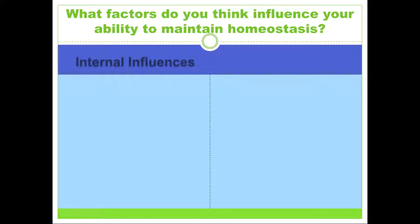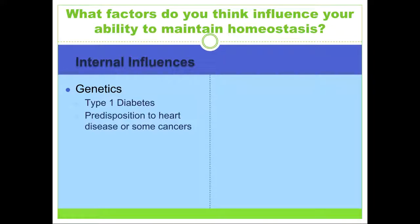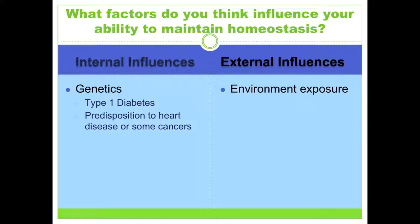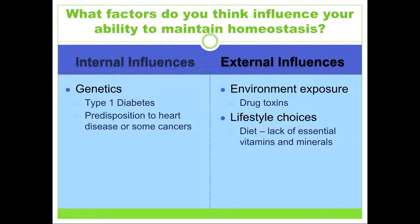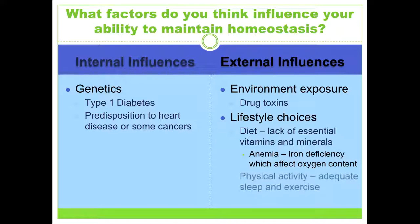There are internal and external influences on your ability to maintain homeostasis. Internal influences include genetics — such as type 1 diabetes, predisposition to heart disease, and some cancers. Remember, you can influence your genetics based on your life choices, which is amazing. External influences include environmental exposure like drug toxins, lifestyle choices, and your diet. If you're lacking in essential vitamins and minerals, that causes a deficiency — anemia is an example, involving iron deficiency which affects oxygen content. Physical activity, adequate sleep, and adequate exercise are also important lifestyle factors.